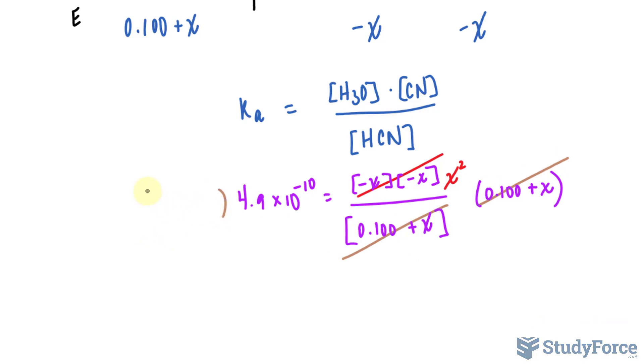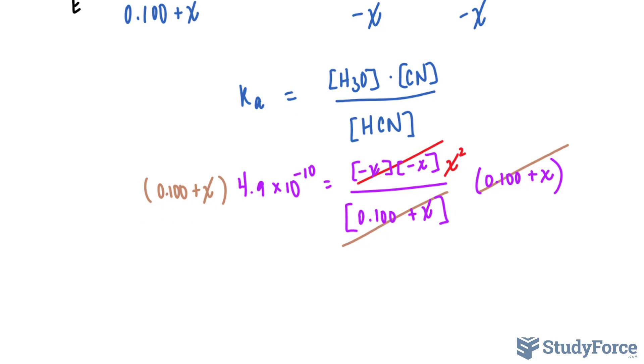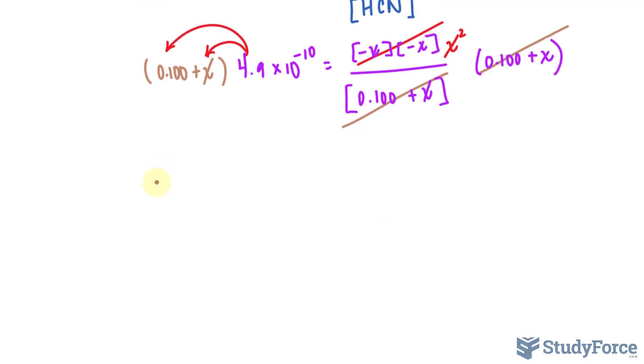And on the left side we have 0.100 plus X. We'll expand this really quickly where we multiply this factor to the two factors within the parentheses. We have 4.9 times 10 raised to the power of negative 10 multiplied to 0.100 plus the same factor multiplied to X.